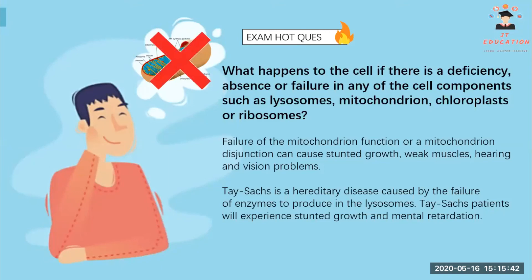What happens to a cell if there is absence or failure of cell components such as lysosomes, mitochondria, chloroplasts, or ribosomes? Failure of mitochondria function will cause stunted growth, weak muscles, and hearing and vision problems. If there are no lysosomes, you get Tay-Sachs disease, which causes undergrowth and mental retardation.